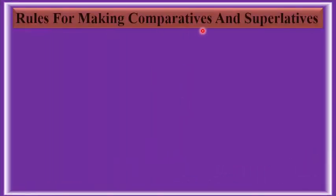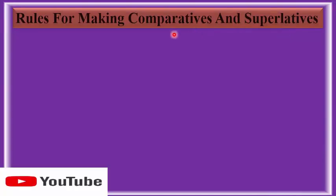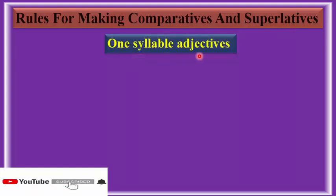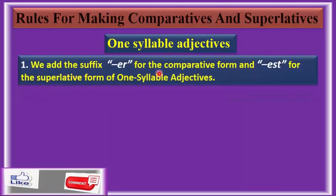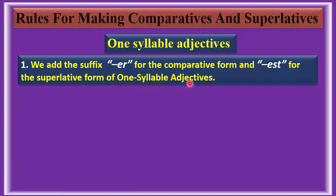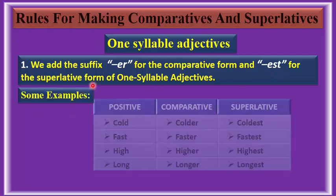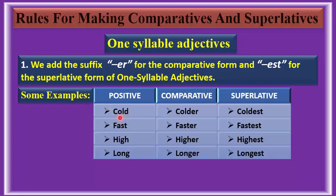Rules for making comparatives and superlatives. Rule number one: for one-syllable adjectives, we add the suffix '-er' for the comparative form and '-est' for the superlative form.